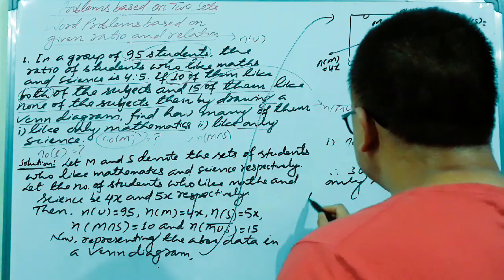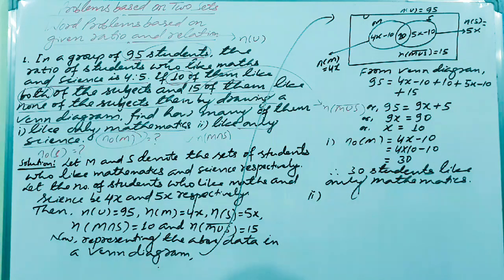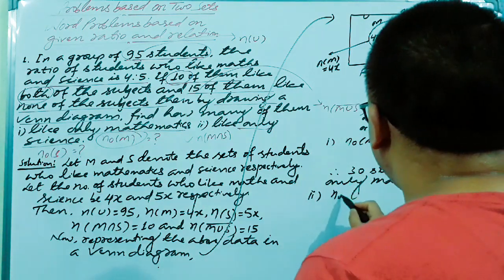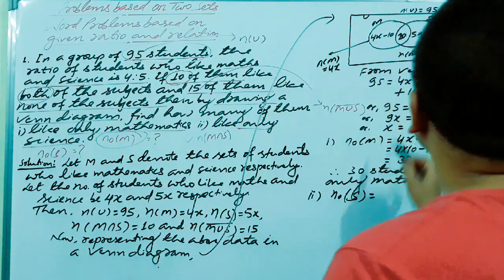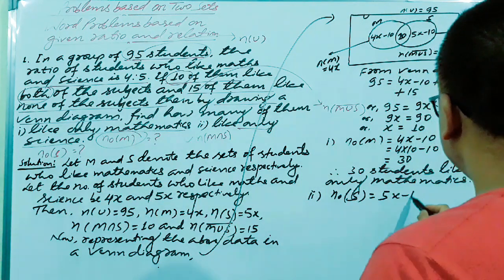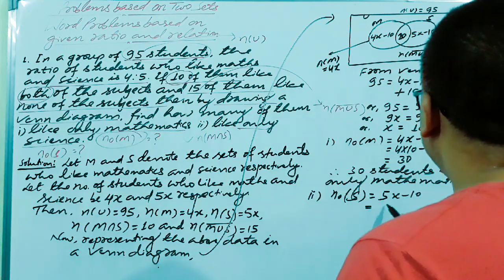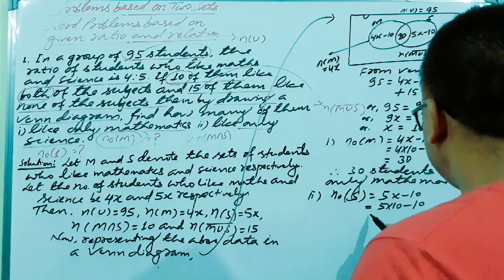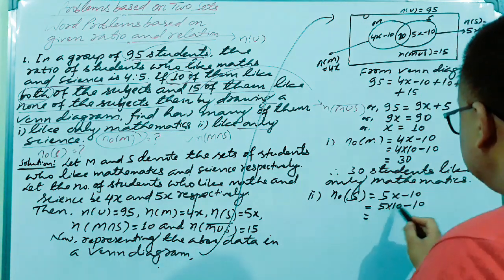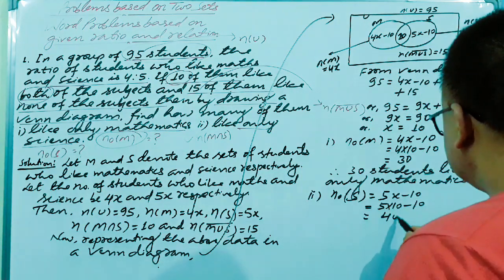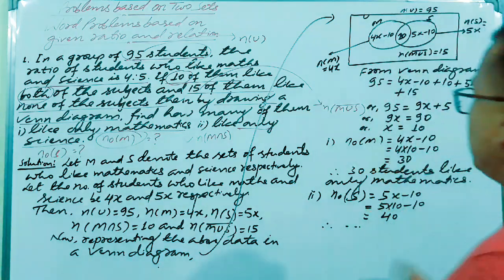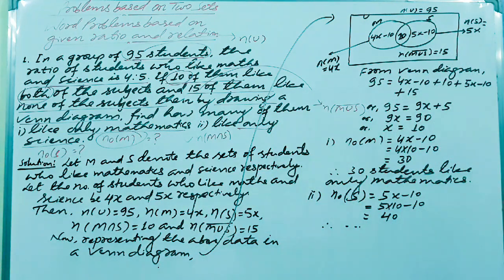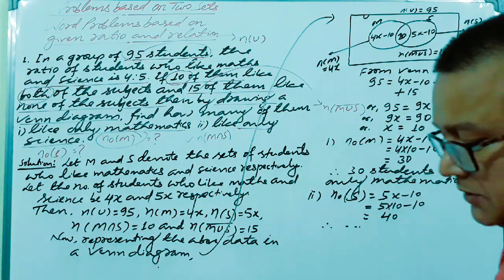For the second part, only science equals 5x minus 10 from the Venn diagram. Substituting x = 10 gives 5 × 10 − 10 = 50 − 10 = 40. Therefore, 40 students like only science. That's how you do this type of question.